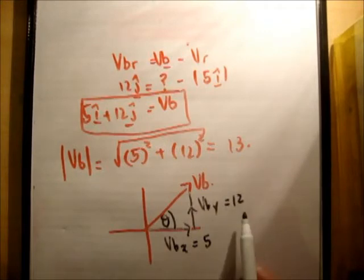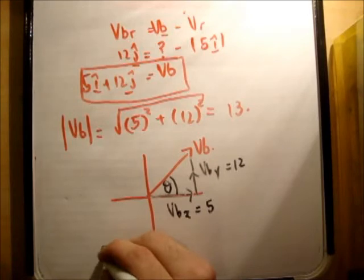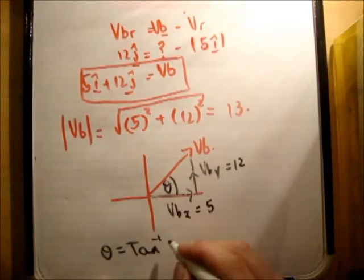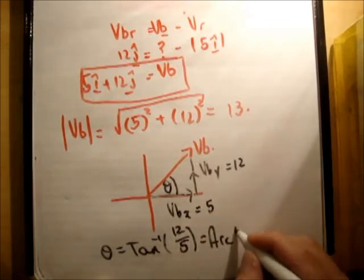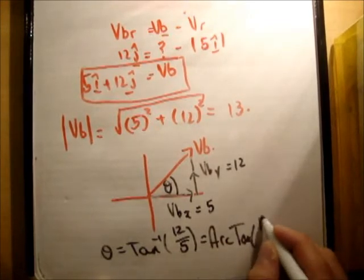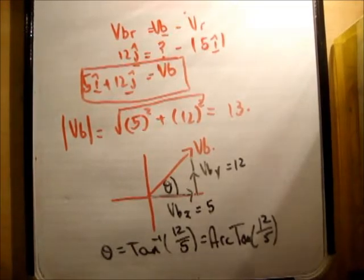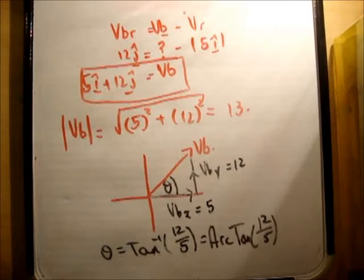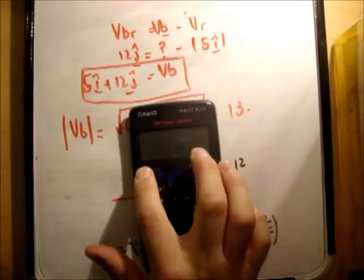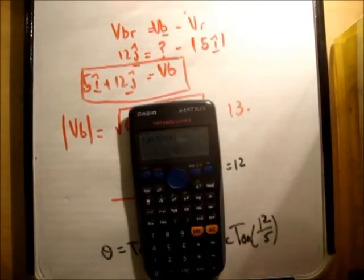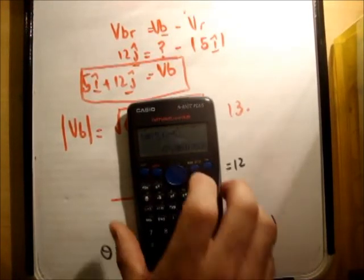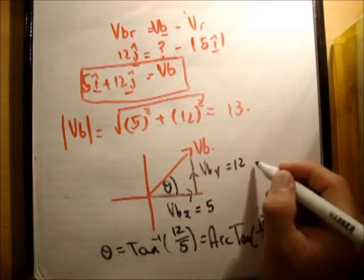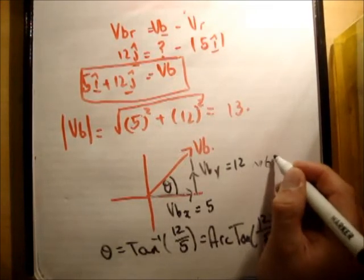So you could say that theta is equal to the inverse tan of 12 over 5 is equal to the arc tan of 12 over 5. Arc tan and inverse tan are the same thing. And theta, if you just plug that into your calculator, so press shift, tan for inverse tan, 12 over 5. And we get 67.38. So we'll say approximately 67 degrees.